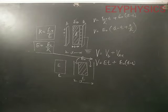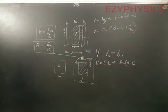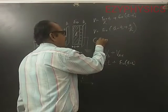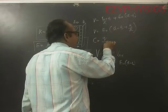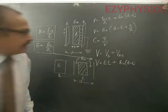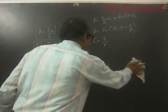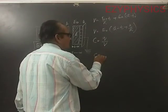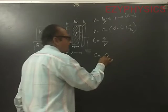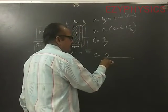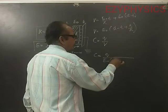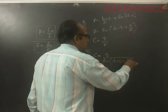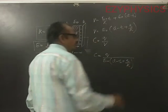We all know that capacitance is equal to Q divided by V, so C = Q/V. Substituting the expression for V, C = Q divided by [E₀ × (d − t + t/k)].